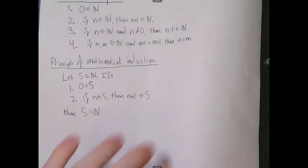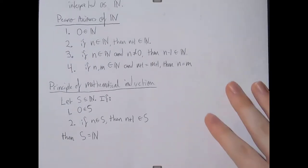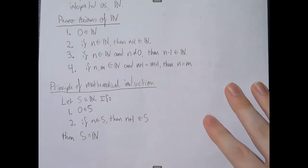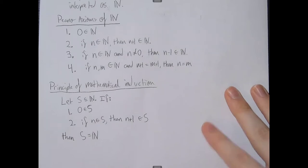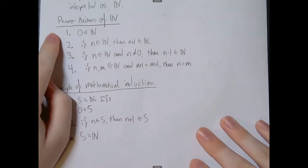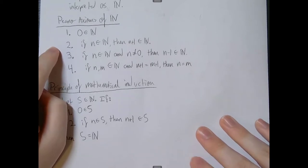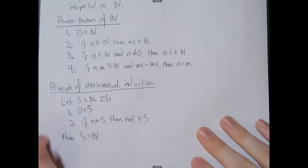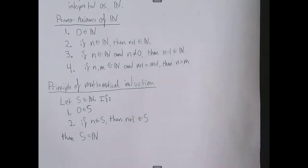Hey everyone, welcome back to 348. In the last video we talked about the principle of mathematical induction, including the Peano axioms and how to use the principle of mathematical induction to prove statements for all natural numbers. Today we're going to continue that discussion. When we talk about the principle of mathematical induction, we only really applied the first two Peano axioms: zero is an element of the natural numbers, and if n is an element of the natural numbers then n plus one is a natural number. Those are the only two we used to show that our solution set of natural numbers satisfying a certain proposition is exactly equal to the natural numbers.